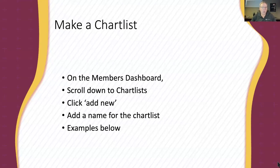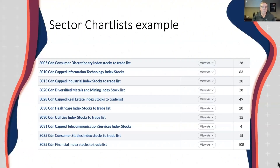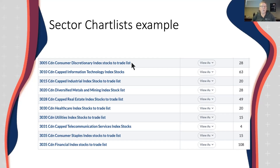To make a chart list on the members dashboard, scroll down to chart lists and click Add New, then add a name. Here are some sector chart list examples — I've put a number at the front to control the sort order. I've made a nice long descriptive title; you have quite a few characters to define exactly what's in that group. The idea behind having a sector chart list is that if consumer discretionary stocks are breaking out or gold stocks are breaking down, you can go directly into that industry and see what's going on.